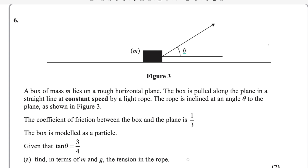Hi there. Welcome back to Membash Channel's MathWeb. In this video, I will answer question number 6 from Pearson and Excel A Level Exam for Mechanics 1. This exam is taken in June 2024. The paper reference is WMB01-01.